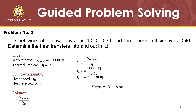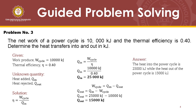For Q_out, we use the relationship: work cycle equals Q_in minus Q_out. Rearranging, Q_out equals Q_in minus work cycle. Substituting the values of Q_in and work cycle, we get Q_out as 15,000 kilojoules. As you can see, Q_in is greater than Q_out, which is true for all power cycles. Thus, the heat into the power cycle is 25,000 kilojoules, while the heat out is 15,000 kilojoules. Thank you. Adios.